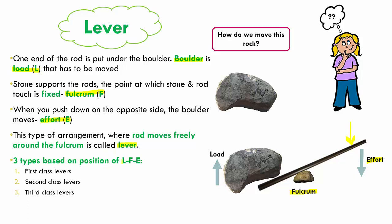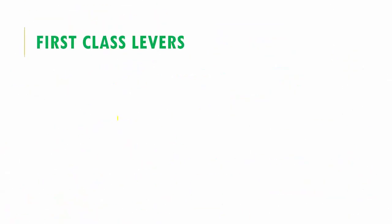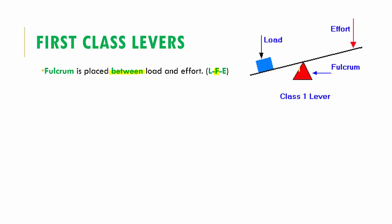Based on the position of the load, fulcrum, and effort, levers are classified into three types: first class levers, second class levers, and third class levers. In first class levers, the fulcrum is in the center, and the load and effort are on either side — F in the center, E and L on the either sides.